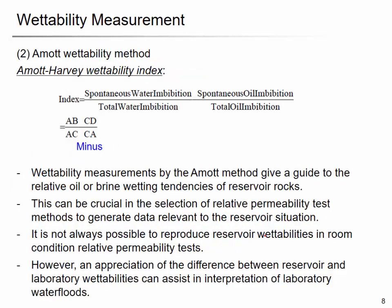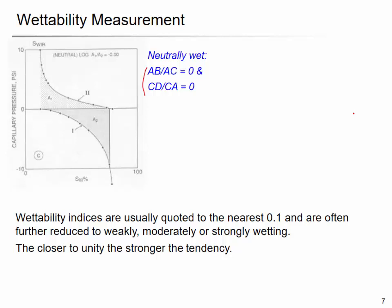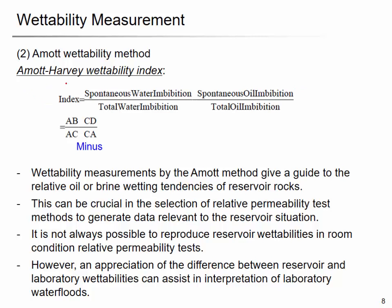The wettability index has a range from zero to one, and you have two separate indices — one for water and one for oil. People developed a different parameter called the Amott-Harvey wettability index to combine the water and oil imbibition together. This index is AB over AC minus CD over CA.